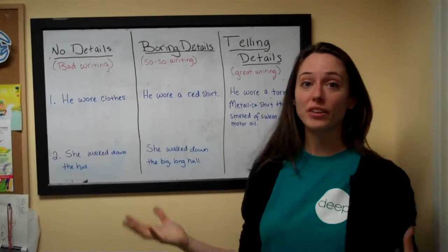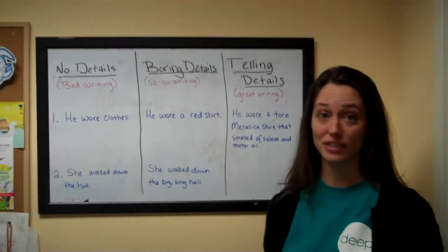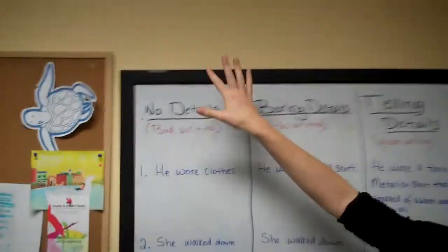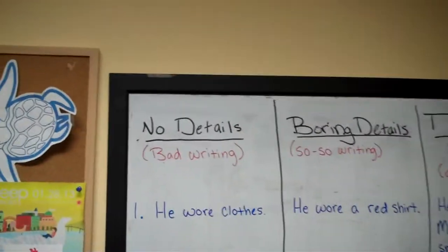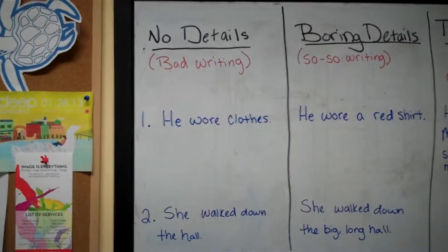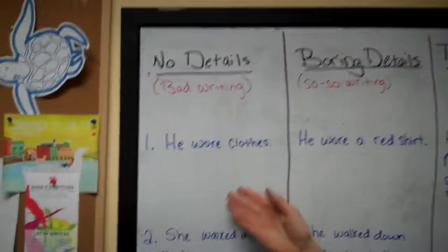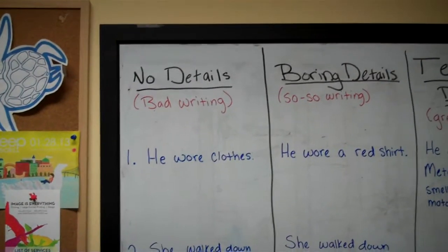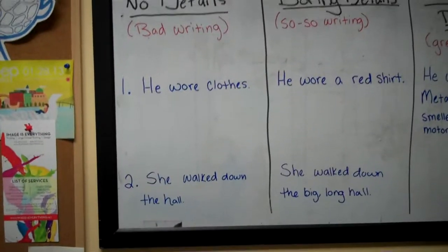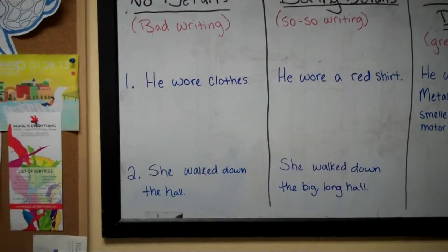Before you start with your kids, you would explain each of these terms. No details is when you have no information — you can't tell anything about what is going on. Like, 'he wore clothes' or 'she walked down the hall.' We don't know what kind of clothes, and we don't know what kind of hall she's walking down.